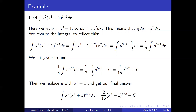Find the integral of x squared times x cubed plus 1 to the three-halves dx. Here we let u equal x cubed plus 1, so du equals 3x squared dx. This means that one-third du equals x squared dx. We rewrite the integral: the integral of x squared times x cubed plus 1 to the three-halves dx equals the integral of x cubed plus 1 to the three-halves times x squared dx, which is the integral of u to the three-halves times one-third du.